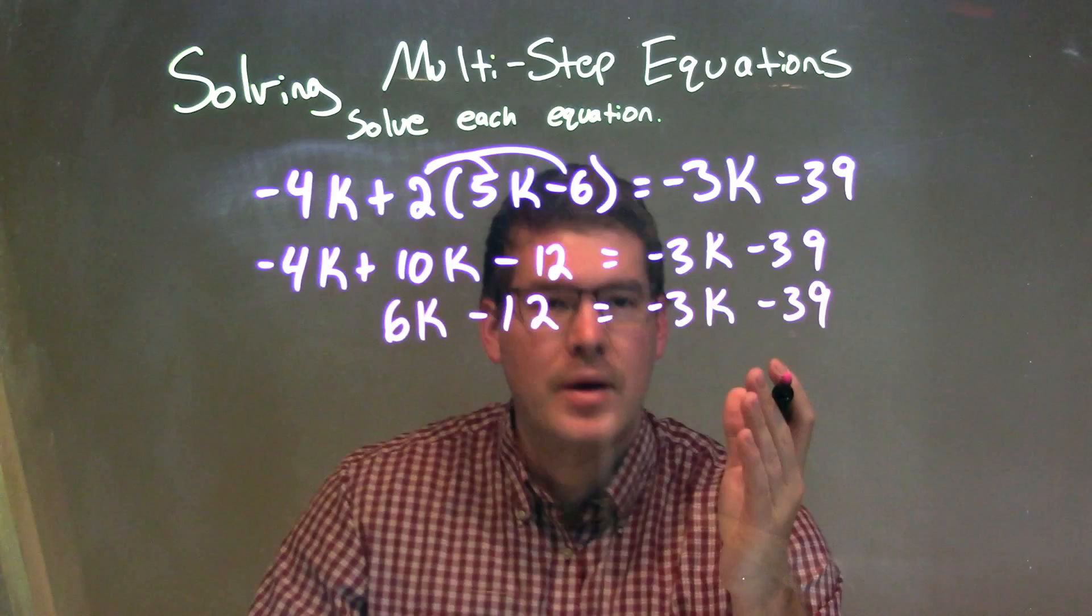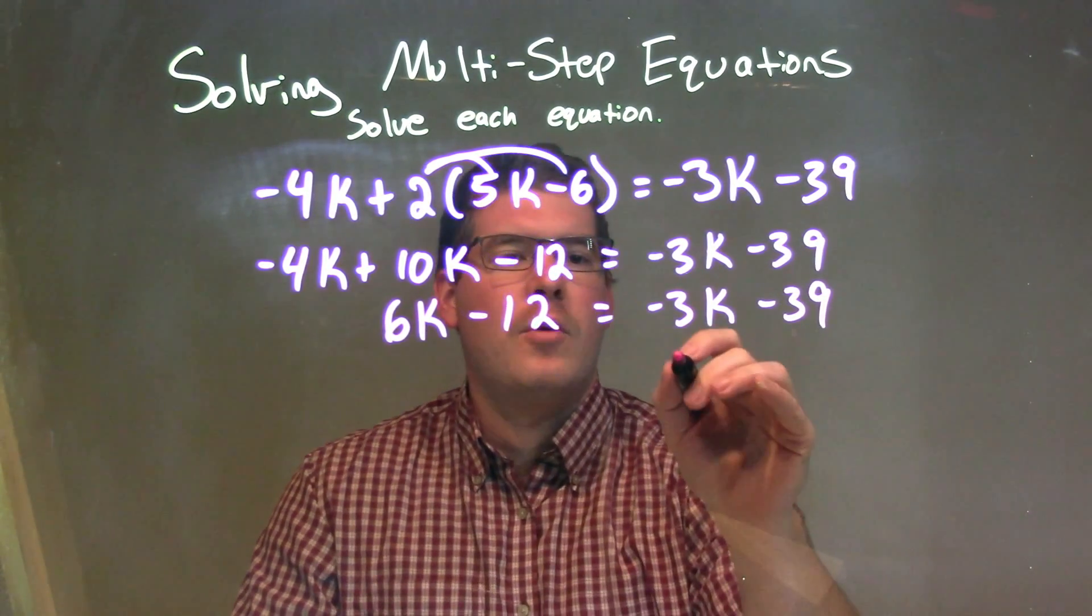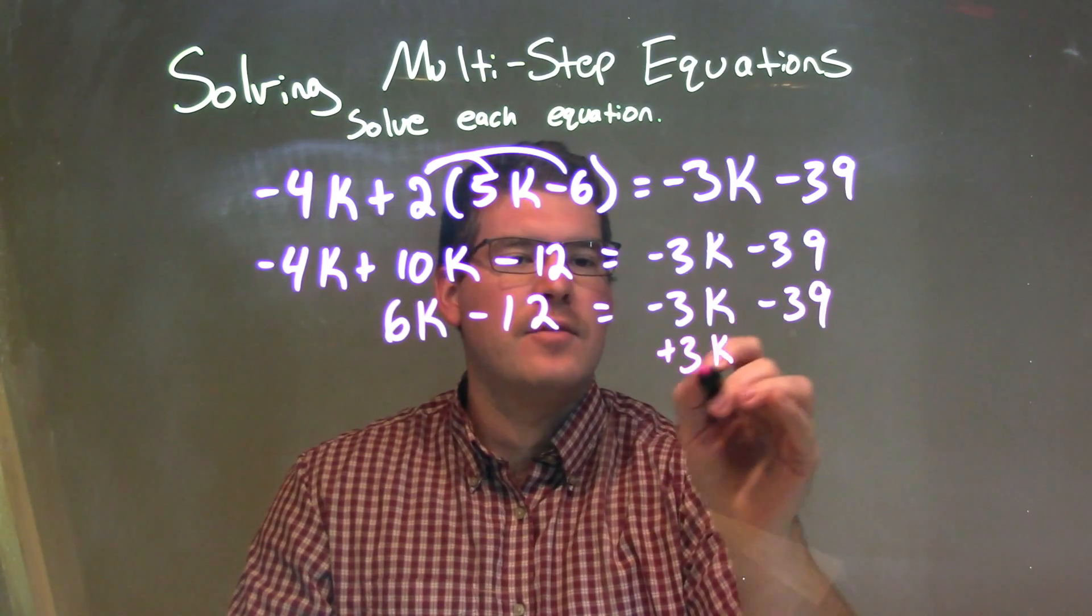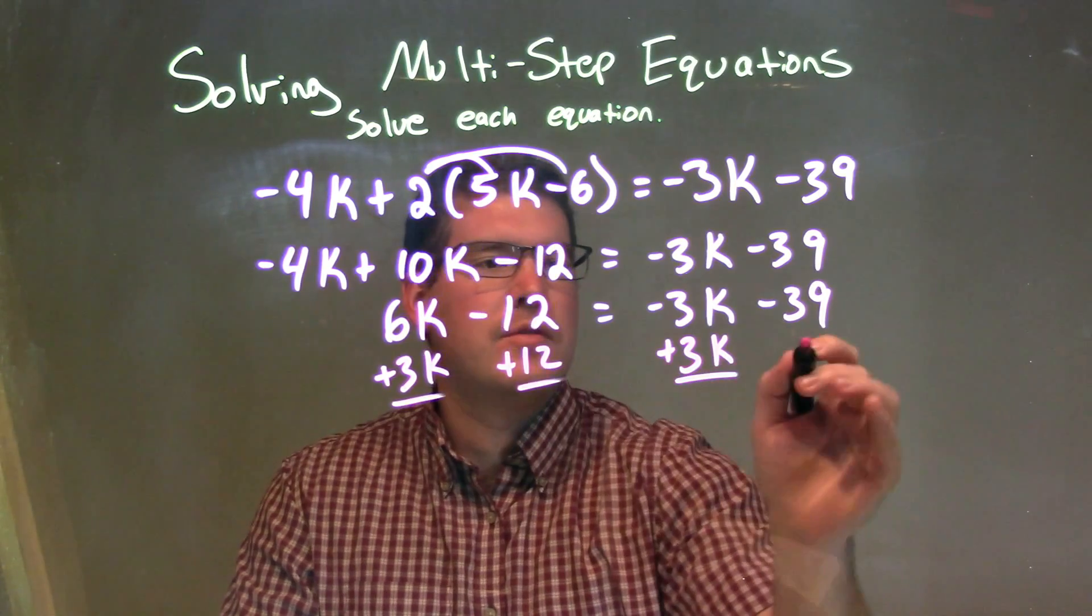So, from here, I'm going to combine my like terms. I'm going to bring my variables to the left and my numbers to the right. So, I'm going to add 3k to both sides right here. And I'm going to add 12 to both sides.